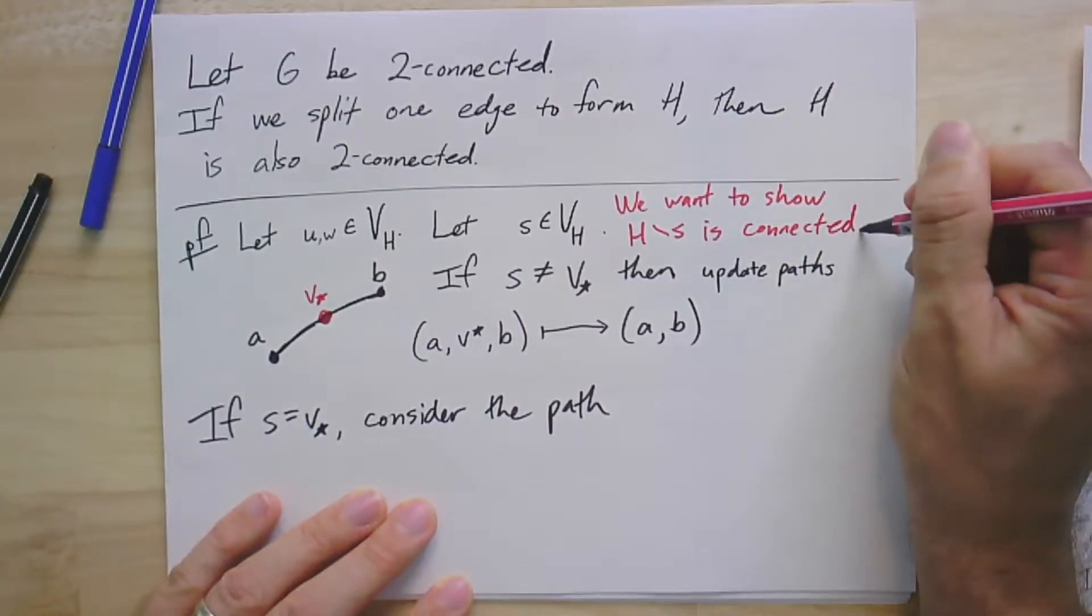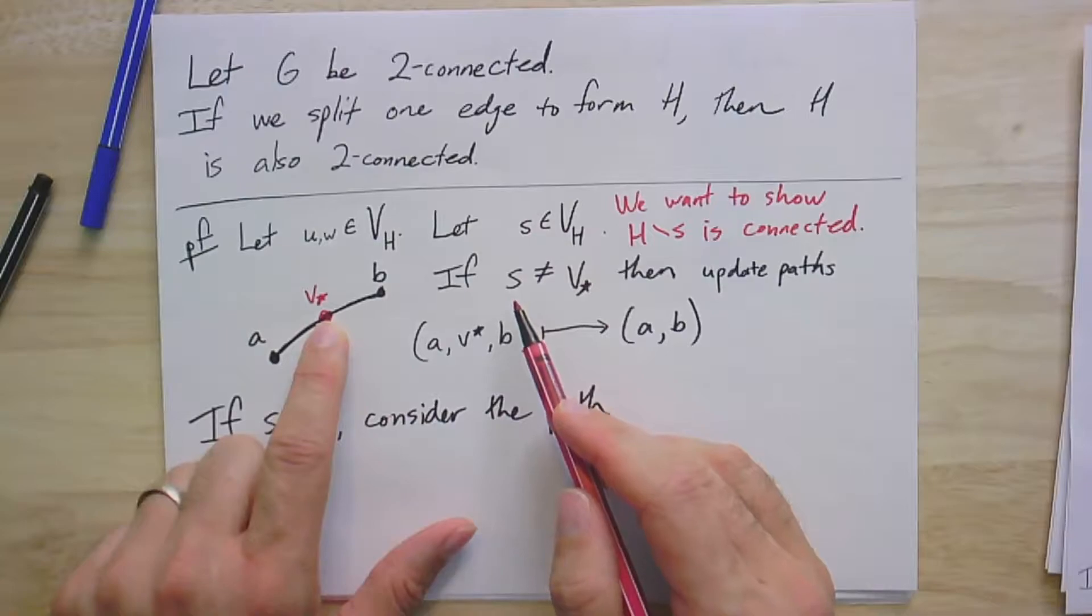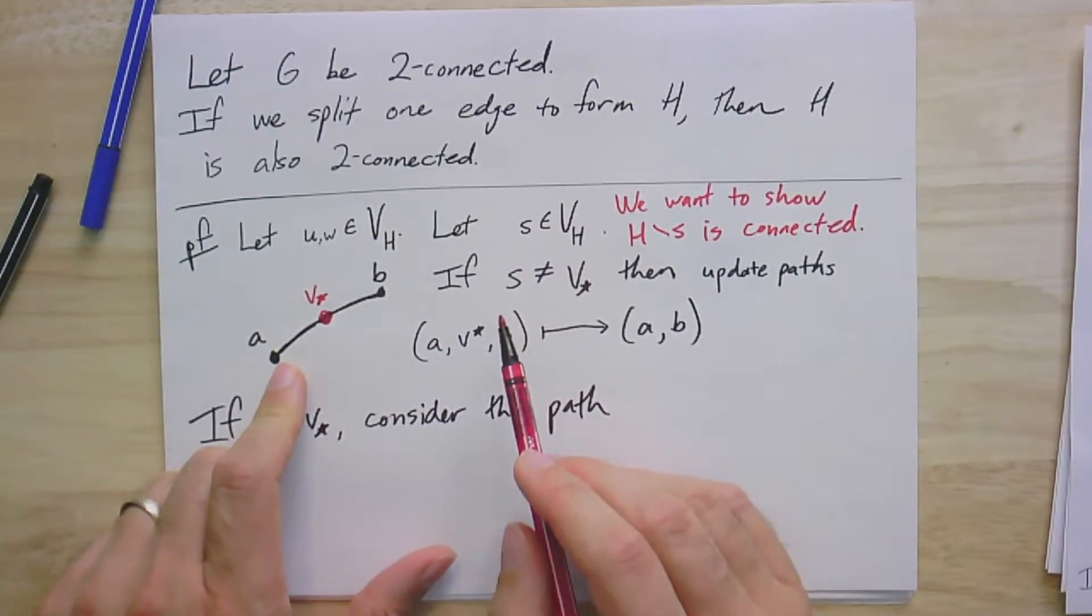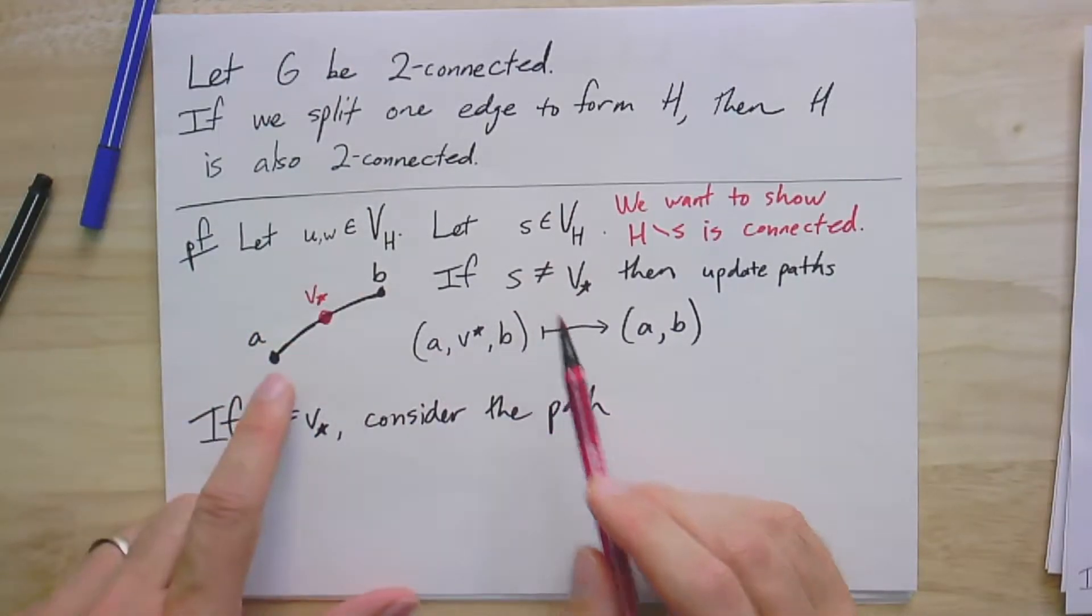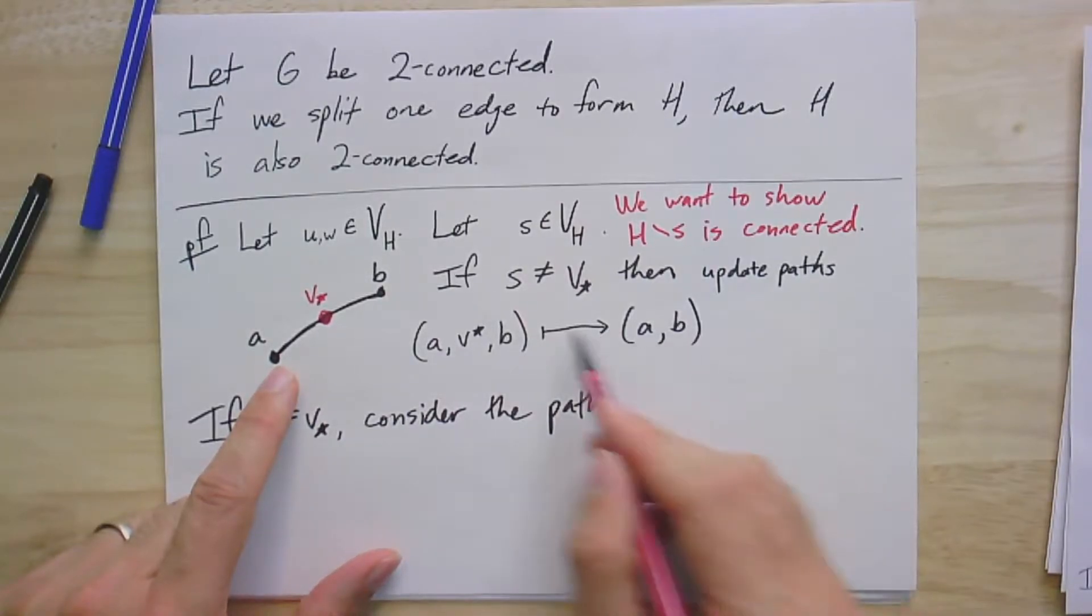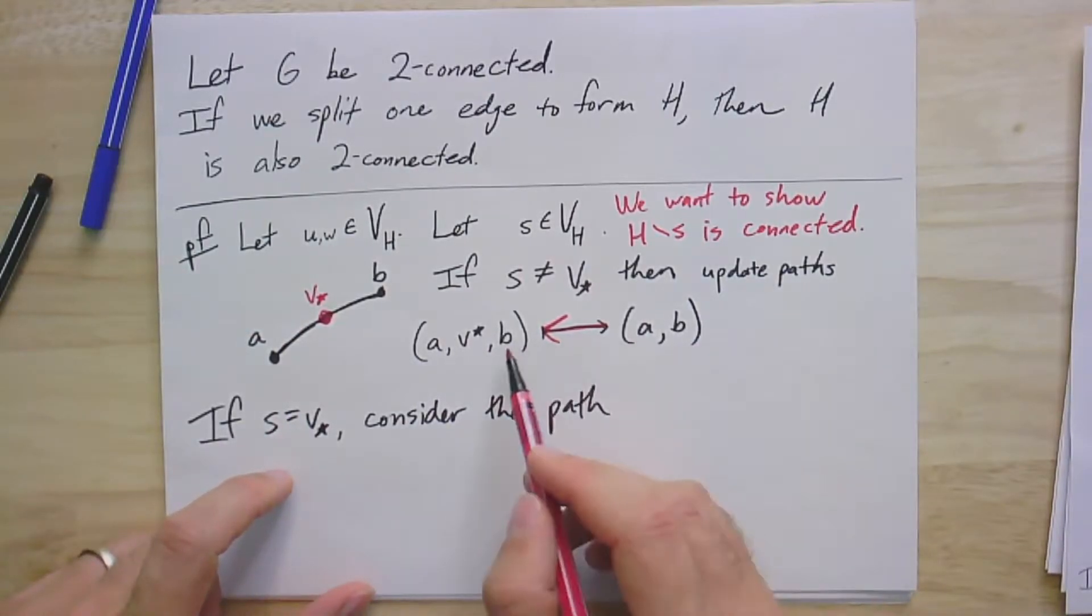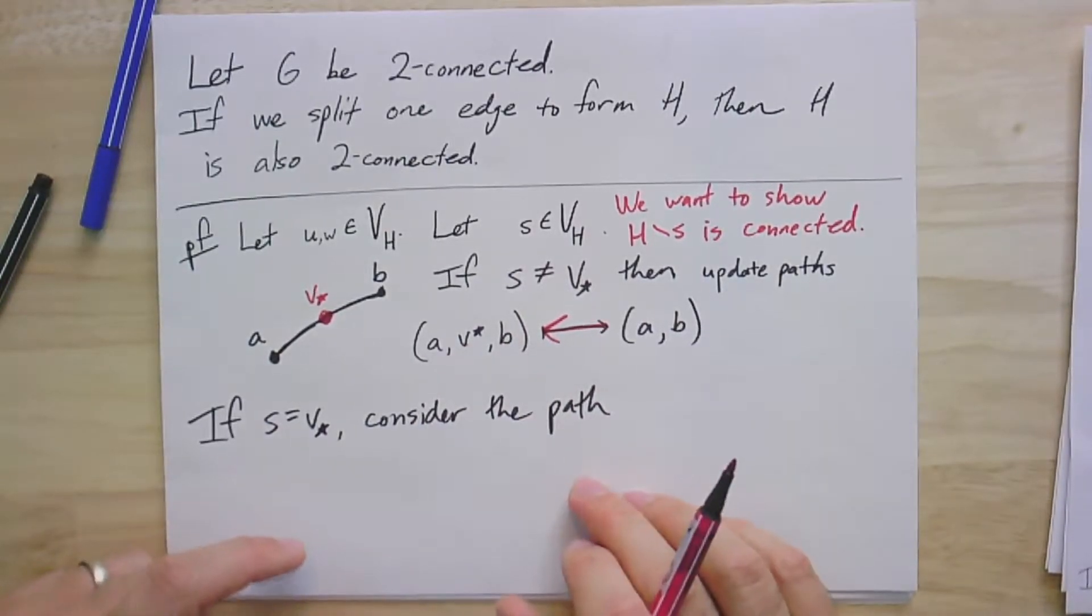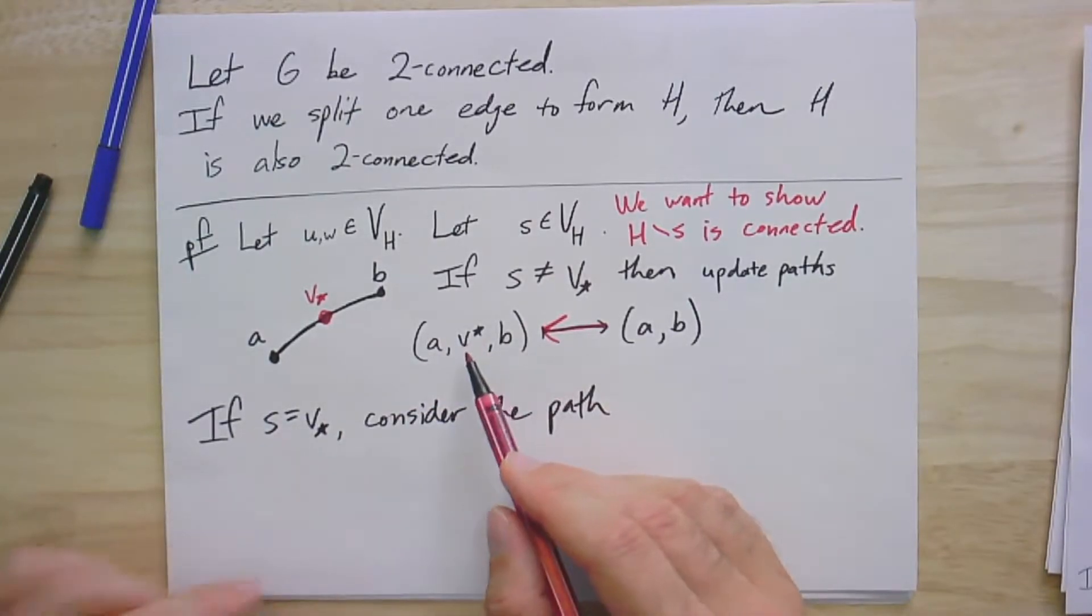So I wrote in the first case here, if S is different from this one vertex here, then there was a path from U to W in G. And if that path used the edge AB to get from U to W, then we're going to replace it with a slightly longer path from A to V* to B. So, we can update the path as long as we didn't remove this one vertex.